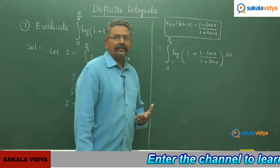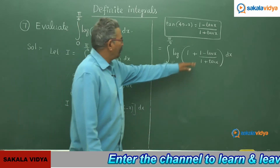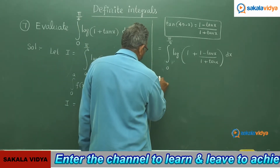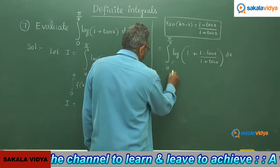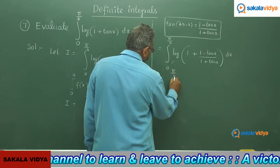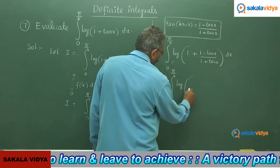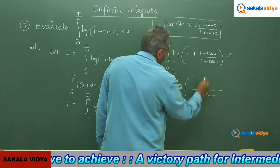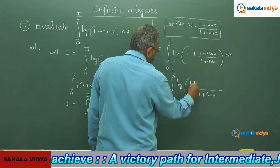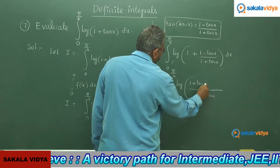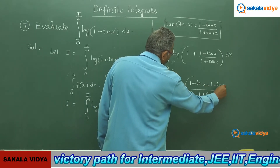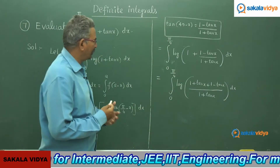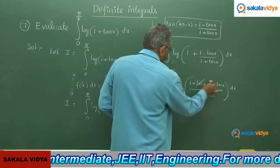Now, what is our plan? It is very easy. We have to simplify inside the bracket. So integral 0 to pi by 4 of log: the LCM is (1 plus tan x). So we get (1 plus tan x) plus (1 minus tan x), all over (1 plus tan x). Further simplification: tan x and tan x get cancelled, giving log(2 / (1 plus tan x)).